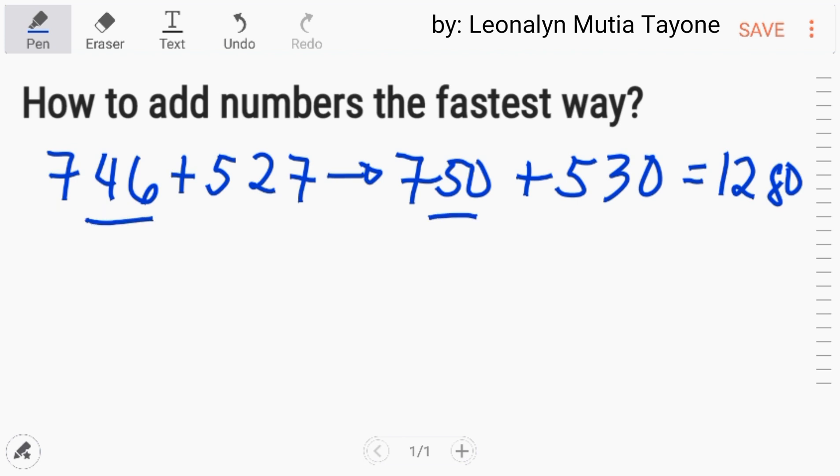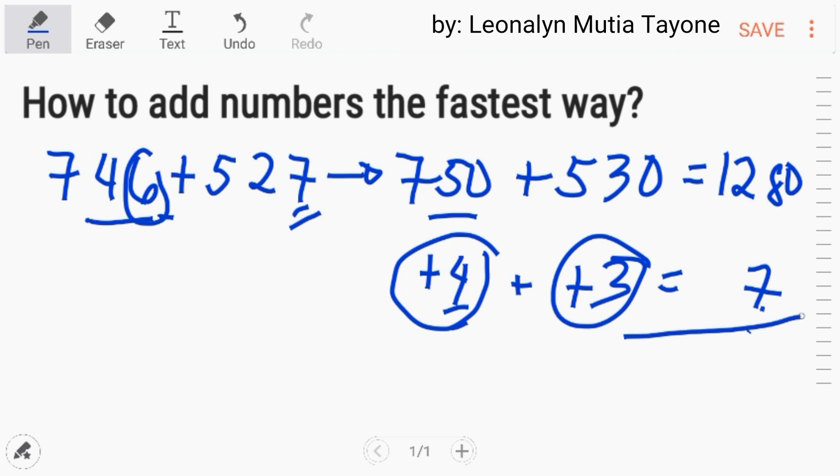Itong 46 and 50, paano naging 50? Nag-add ka ng 4. Ang paris ng 6 ay 4. Paris ng 7 ay 3. Ito yung nag-add ka ng 4 para maging 50. Nag-add ka ng 3 para maging 30 or 530. Itong dalawa, 4 plus 3 equals 7. Yung 7 yan yung i-deduct mo dyan sa 1,280 mo. Itong 7 naman, ang kaparis nitong 7 ay 3. Kasi 0 yan, mag-sum ka ng 10. Itong 8, nakuhanan mo na ng isa, magiging 7 na yan siya. So, that is 73. Bring down mo lang si 12. The answer is 1,273.